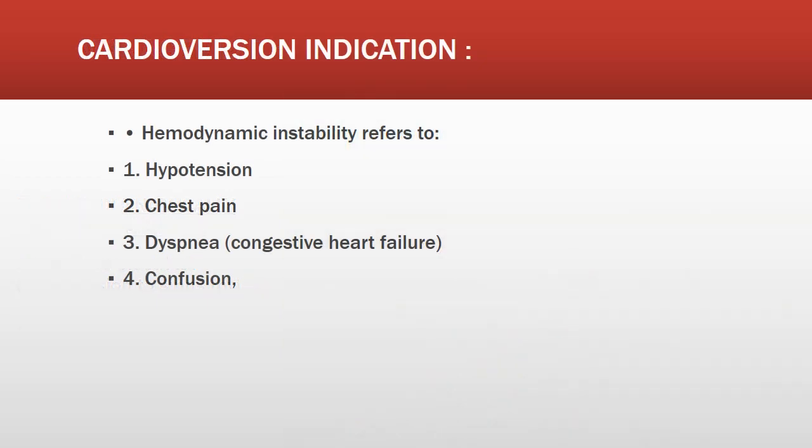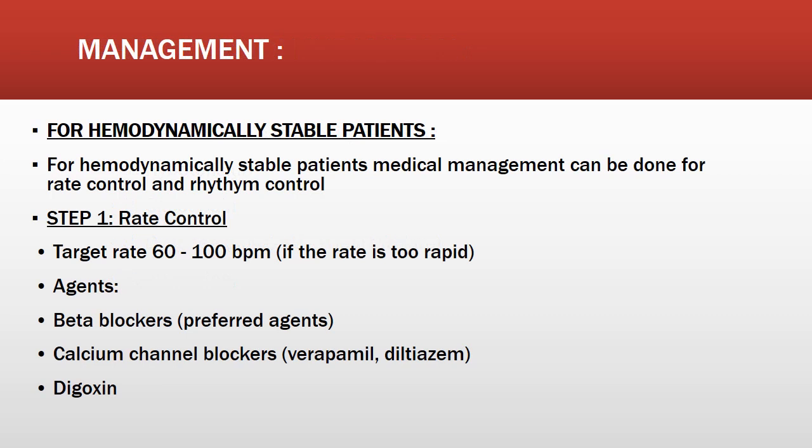Cardioversion indications include hypotension, chest pain, dyspnea, and confusion. For hemodynamically stable patients, we perform medical management focusing on rate control and rhythm control. For rate control, the target is 60 to 100 beats per minute, using beta blockers as the preferred agents, calcium channel blockers such as verapamil or diltiazem, or digoxin.